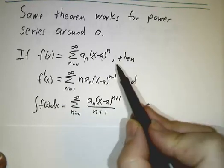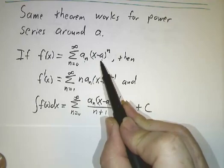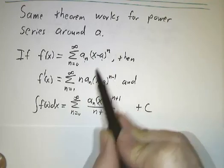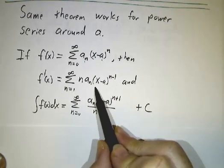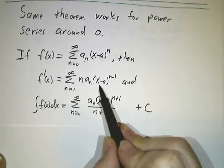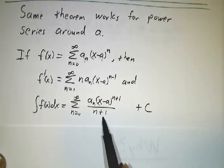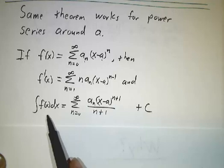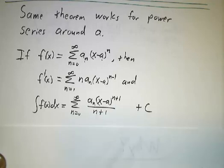It says if you have a power series, then as long as you're within the radius of convergence, the derivative is gotten by taking the derivative of each term and the integral is gotten by taking the integral of each term. And here I've written it as an indefinite integral, so you need the plus c.